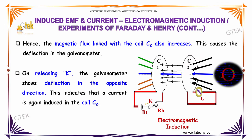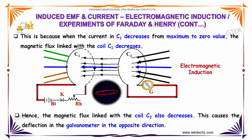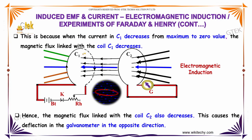On releasing K, the galvanometer shows a deflection in the opposite direction. This indicates that the current is again induced in coil C2. This is because when the current in C1 decreases from its maximum to zero value, the magnetic flux linked with coil C1 decreases. Hence, the magnetic flux in coil C2 also decreases, and this causes a deflection in the galvanometer in the opposite direction.